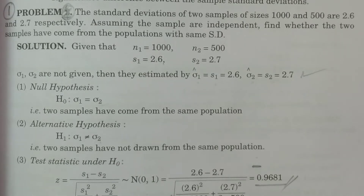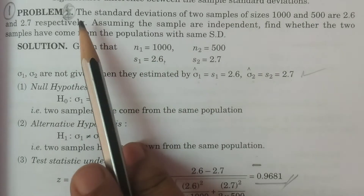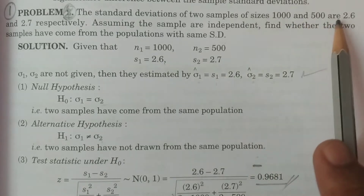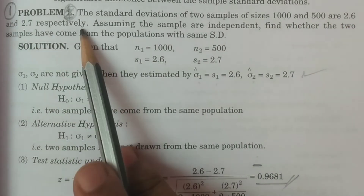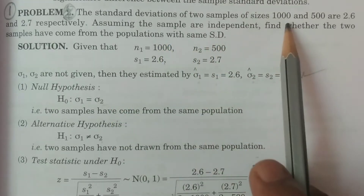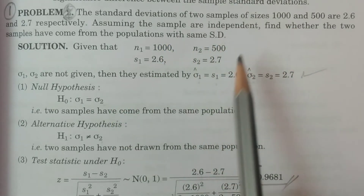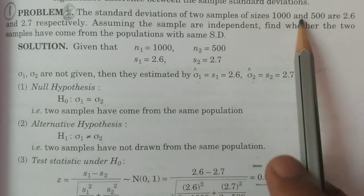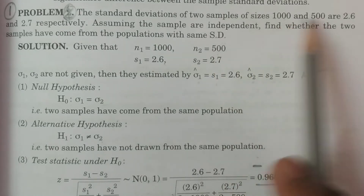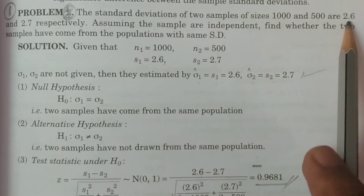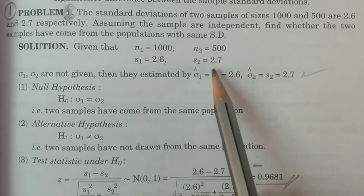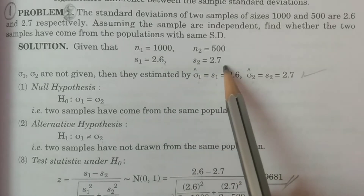Test law, problem one. The standard deviations of two samples are 2.6 and 2.7 respectively. Sample standard deviation S1 is equal to 2.6, S2 is equal to 2.7.